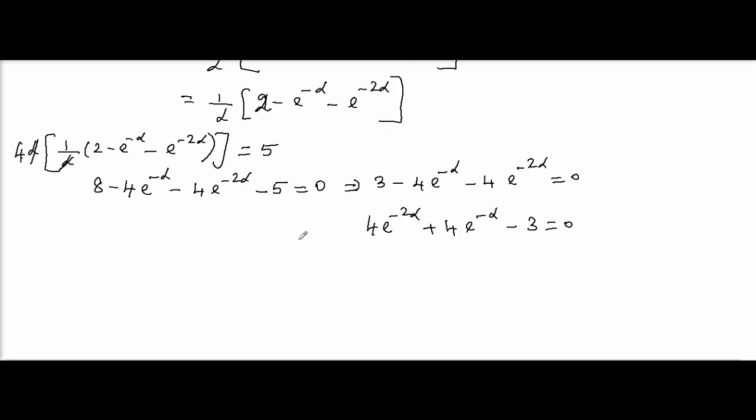Let us take t equal to e^(-α). Therefore, we get 4t² + 4t - 3 equals 0, a quadratic equation in t with sum equal to 4 and product equal to minus 12. So, the two numbers will be 6 and minus 2.